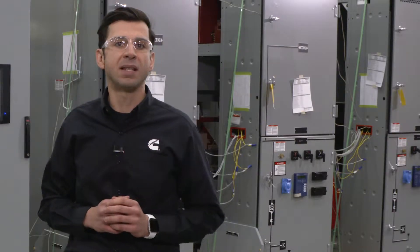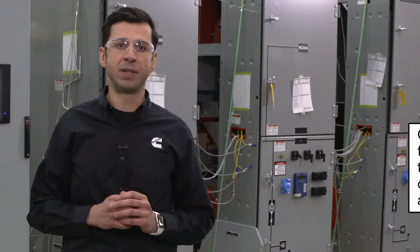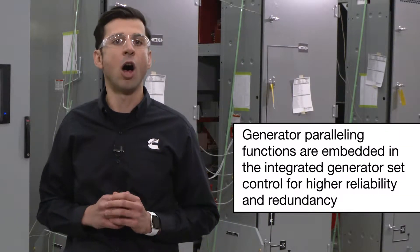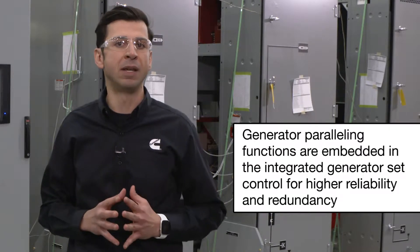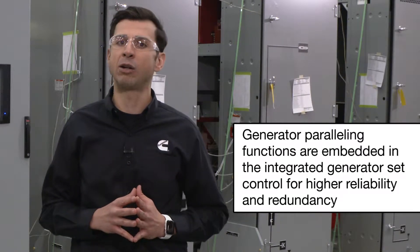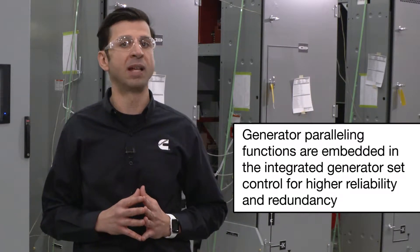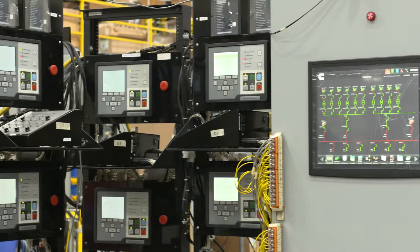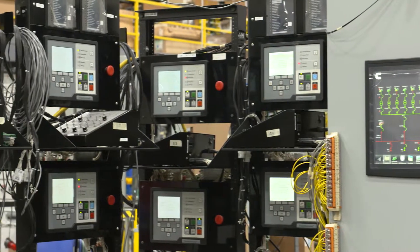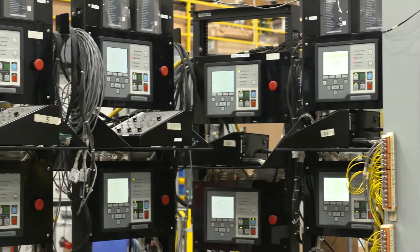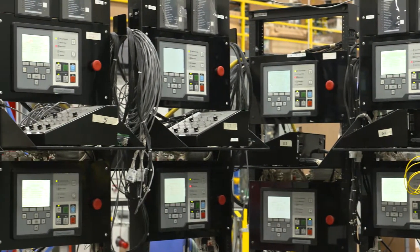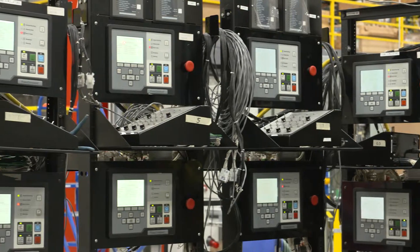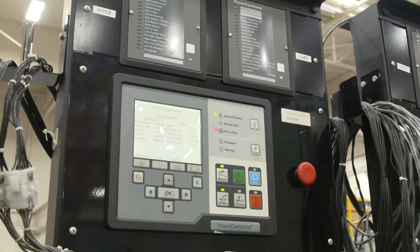As we discussed in the previous videos, the generator paralleling functions are embedded in the Cummins Generator Set control for higher reliability and redundancy. Depending on the complexity of the application and system requirements, there might be a need for a system-level controller.